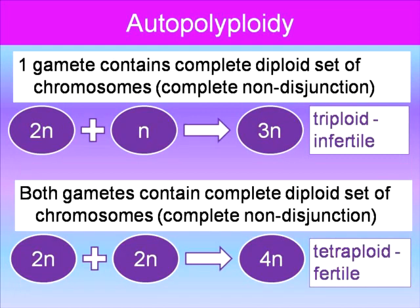We have auto-polyploidy, where one gamete contains a complete diploid set of chromosomes. With complete non-disjunction — where chromosomes don't separate properly — one gamete has 2N and the other has N, so the resulting individual is 3N, meaning it has three sets of chromosomes. Or if both gametes each contain a complete diploid set of chromosomes, then 2N plus 2N equals 4N.